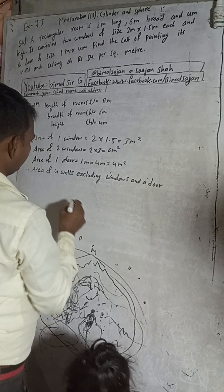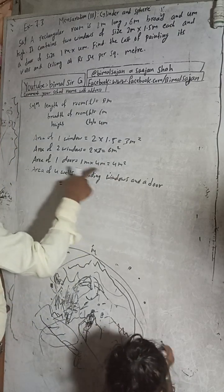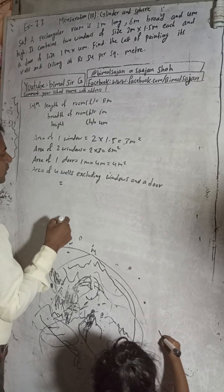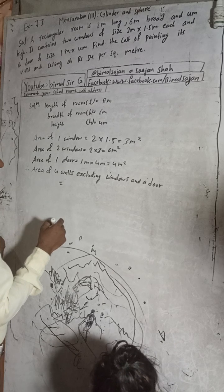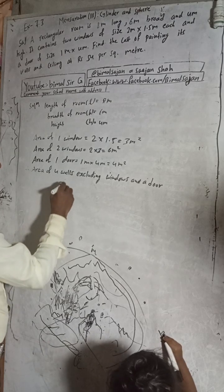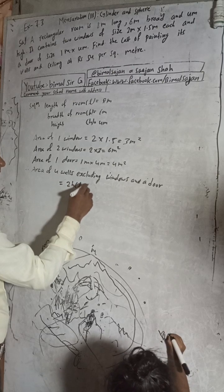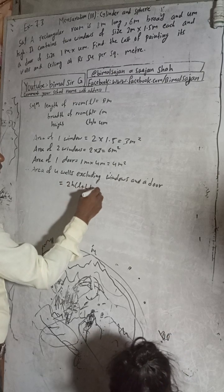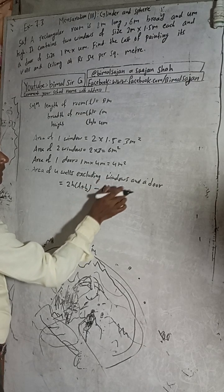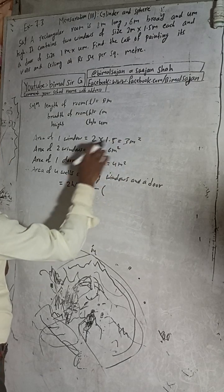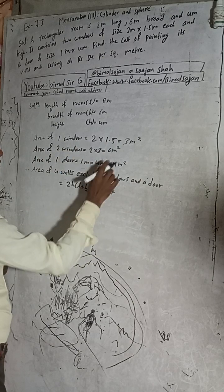Area of four walls excluding windows and door is equal to - the formula will be 2H into L plus B, minus area of two windows which is 6, and plus door which is 4, so minus 10.